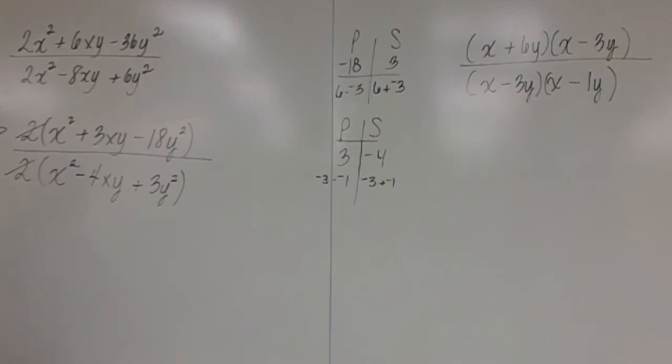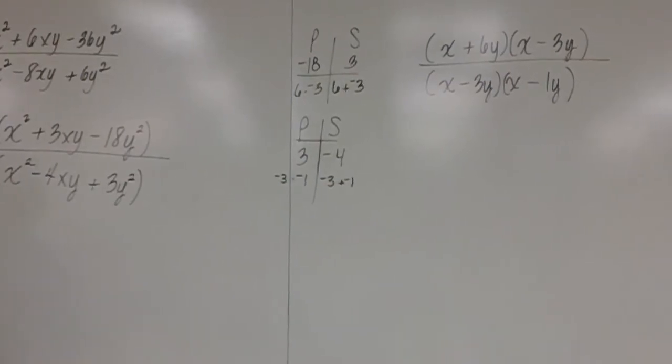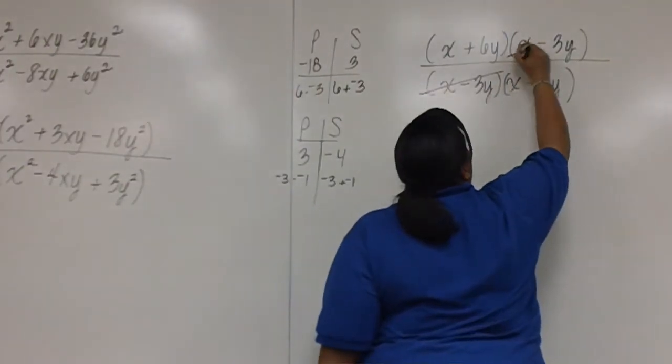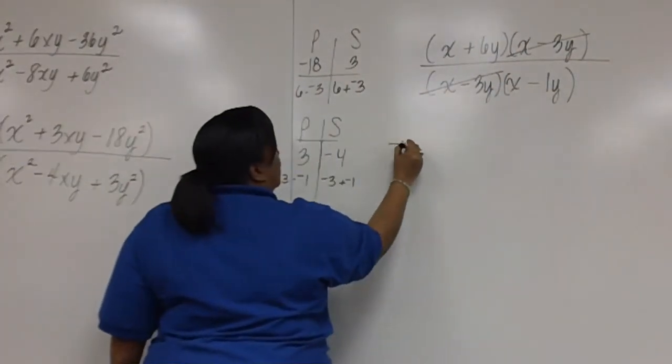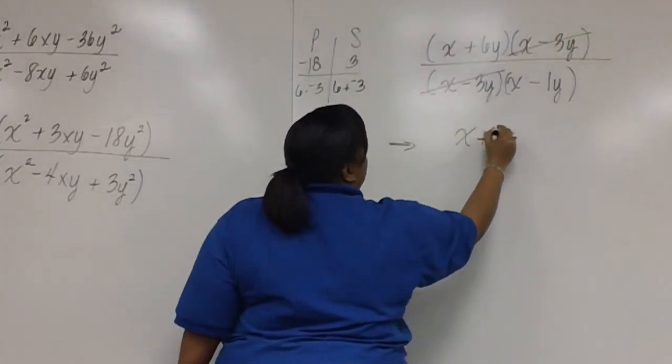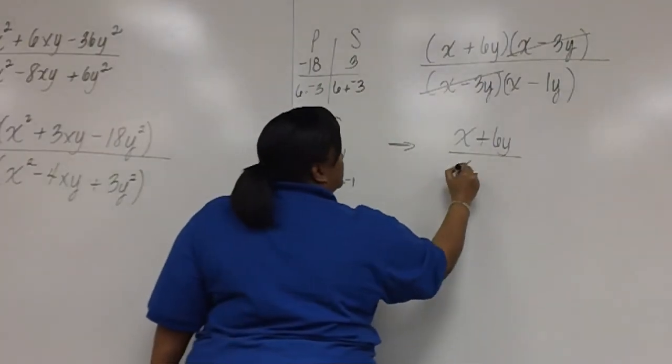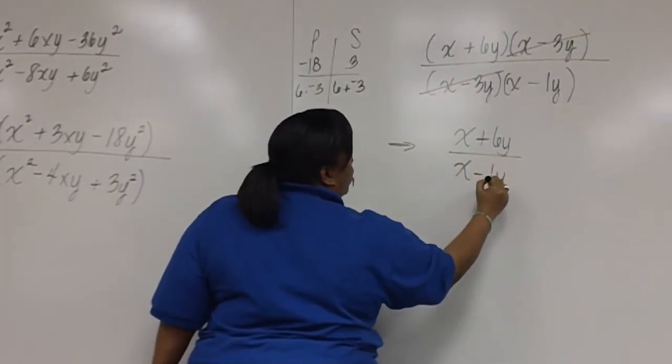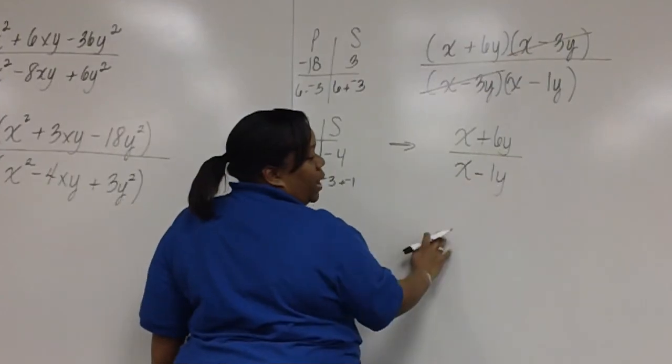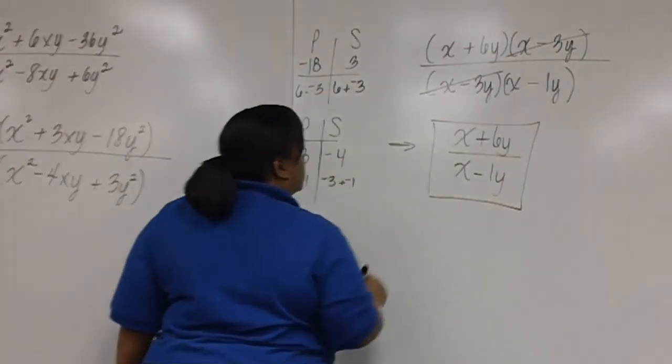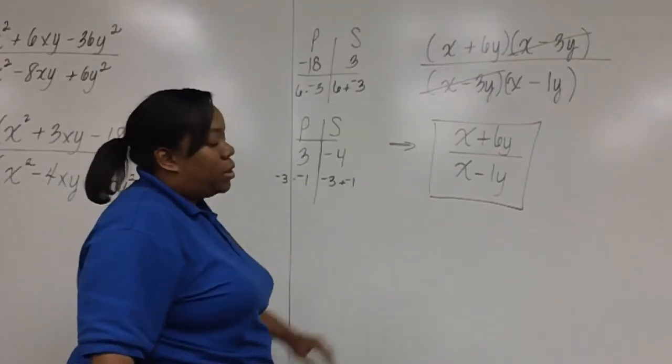Now we're ready to cancel like factors in the numerator and the denominator. Notice that x minus 3y can be canceled. And in the numerator, we're left with x plus 6y over x minus 1y. If you want to write it as x minus y, that's correct also. And this is the answer in lowest terms.